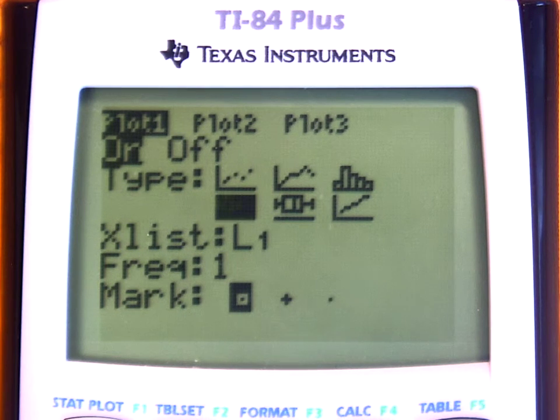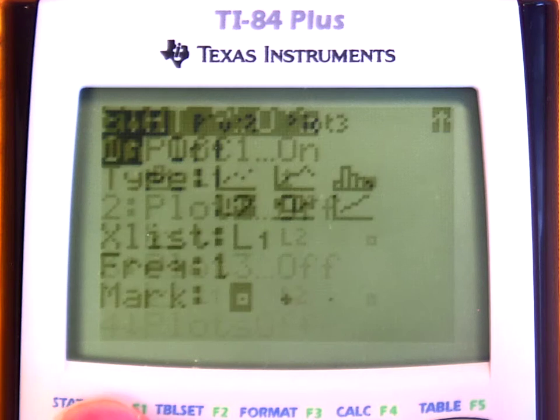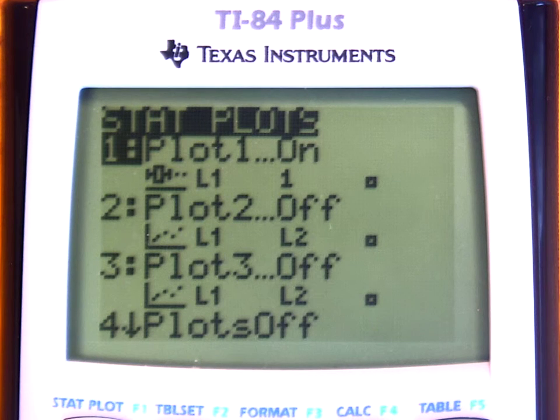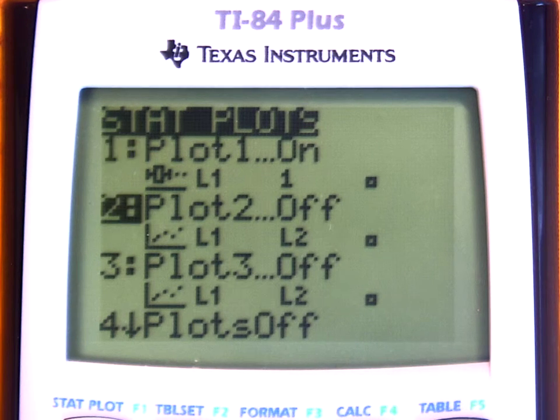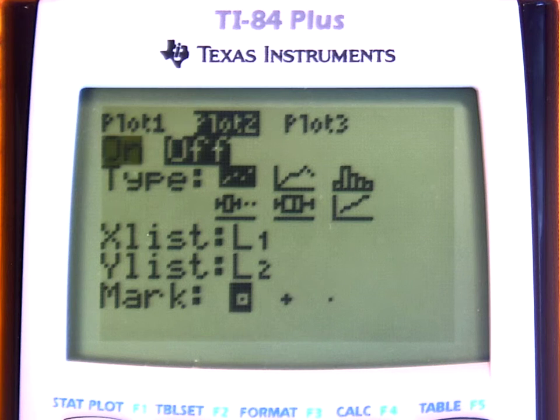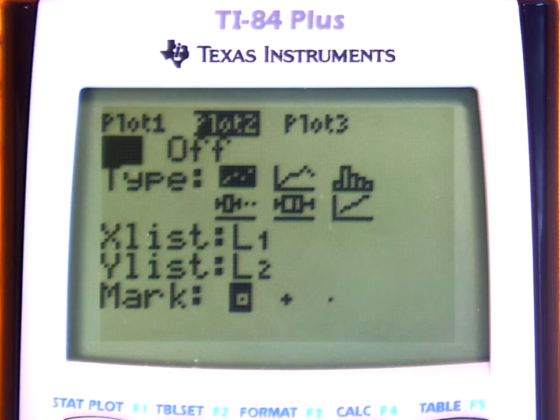So the next thing we should do then is turn on list two. If you press second y equals, you can go down to list two and press enter to select it. I will turn it on.